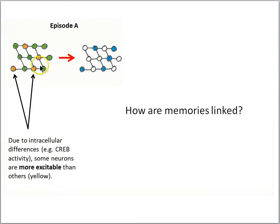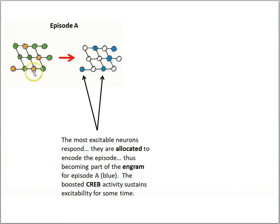We'll start with a population of cells. Episode A is happening, so some of these cells will become engram cells for episode A. Due to intracellular differences — for example, CREB activity — some of these neurons are more excitable than others. This means that some cells, the ones that are a little more excitable, are going to be preferentially allocated to becoming engram cells. The most excitable neurons respond and are allocated to encode the episode, thus becoming part of the engram for episode A.